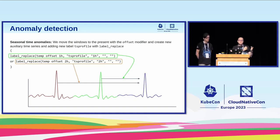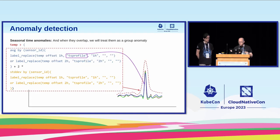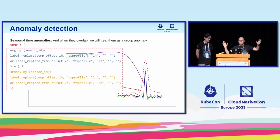But what happens if this spike happens every day or every week because there's a cron job making things spike the CPU or networking? With PromQL, we can do some seasonality profiling and anomaly detection with seasonality. This is just to show you the power of PromQL and the time context that Prometheus provides.